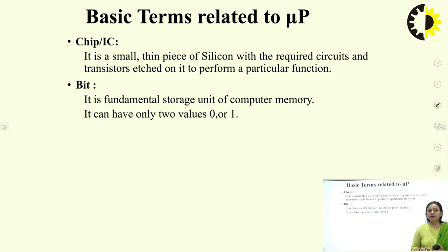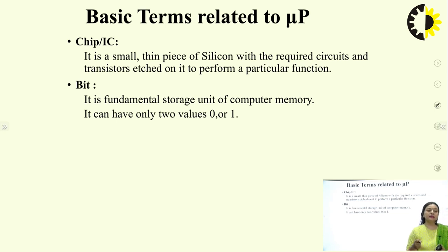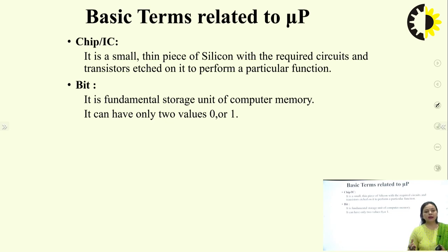Some basic terms related to the processor: first is the chip or IC — a small thin piece of silicon with the required circuits and transistors etched on it to perform a particular function. In the definition of microprocessor, it is a clock-driven IC fabricated with LSI or VLSI technology. For 8085, it is a dual inline package with the same number of pins arranged on left and right side.